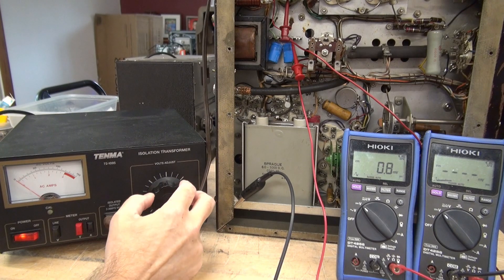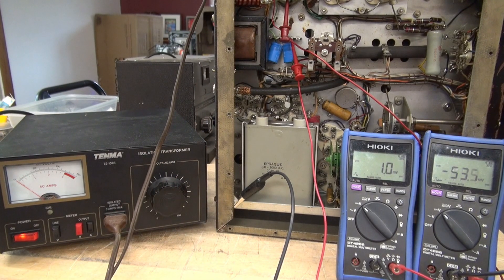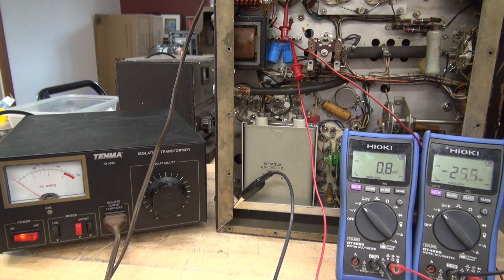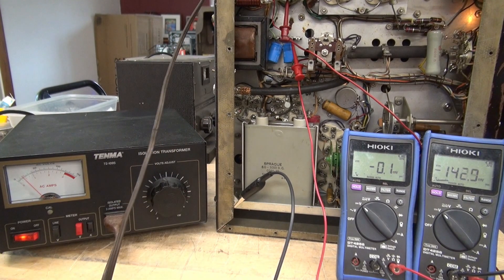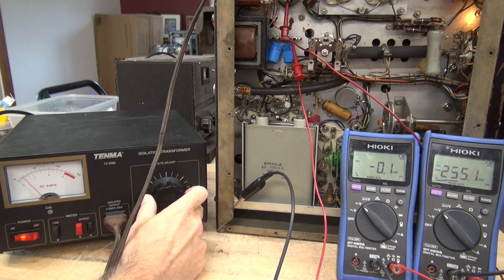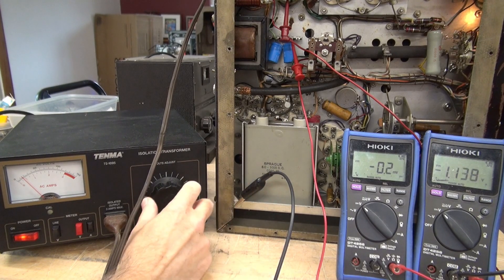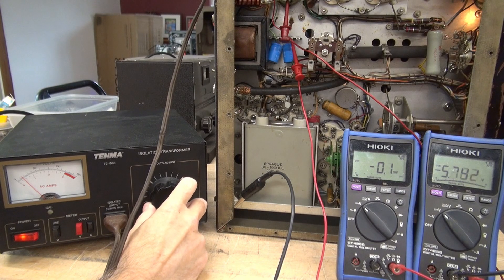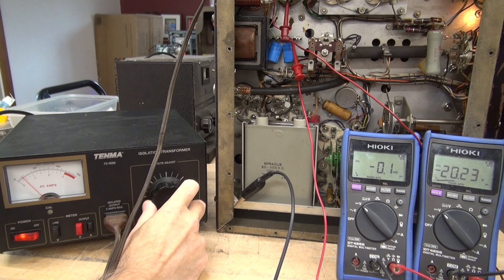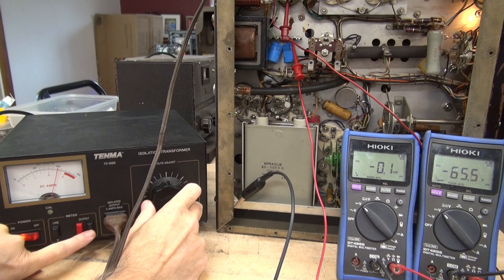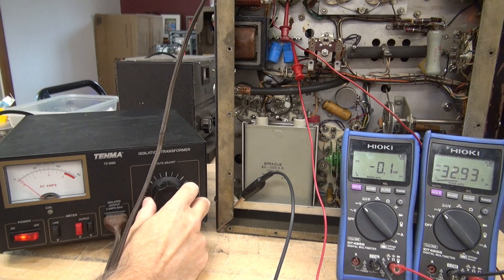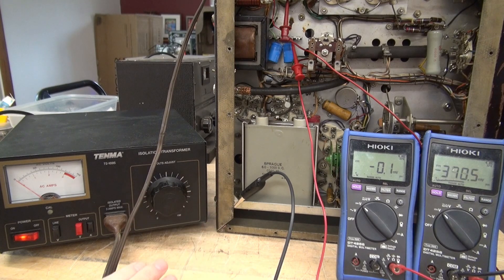So I'm going to pull out the 5V4 tube and we will repeat this test. 5V4 is out. Bring it back up on the variac. So now we won't have any low voltage DC but we should be able to get the negative voltage and look at the amp meter. It's hanging right in there. So I've got negative 60 something volts. I'm at 100 input. So the negative bias supply is fine but we have a problem on the 350 volt DC line.